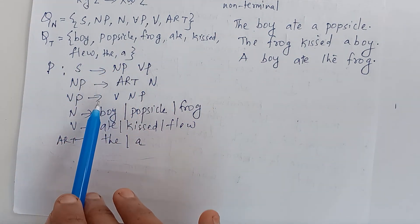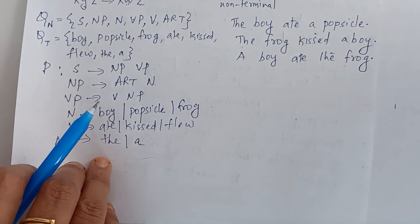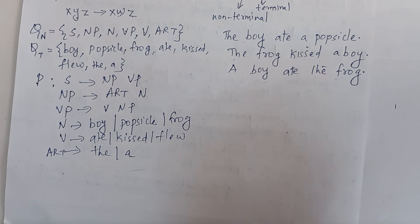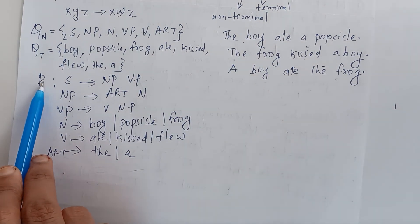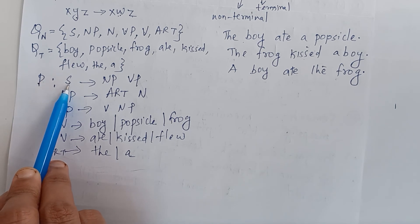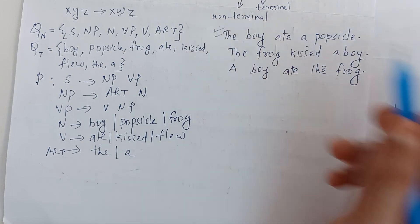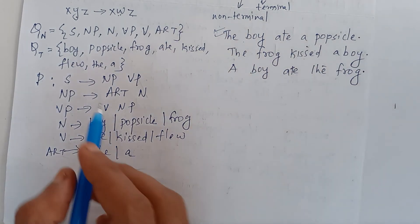Using this generative grammar, we can generate a sentence. The rules from P are to be applied sequentially, starting with S and proceeding until all the non-terminal symbols are eliminated. For example, the boy ate a popsicle. We use the grammar production rules to rewrite it.